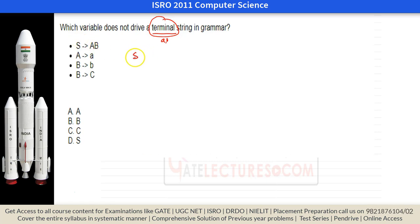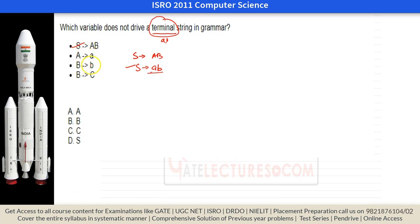S is driving AB, and A is driving 'a', B is driving 'b'. So S is driving terminal symbol AB — this is the terminal string, in which we have all terminals. S is driving terminal string, A is driving terminal string, B is driving terminal string. But C is not driving any terminal symbol. Therefore the answer to this question is C.